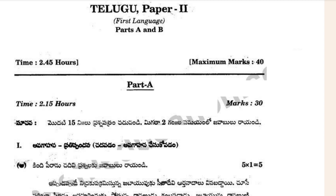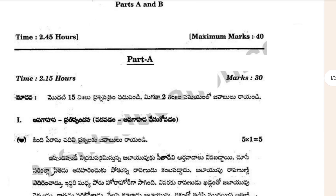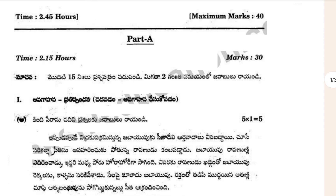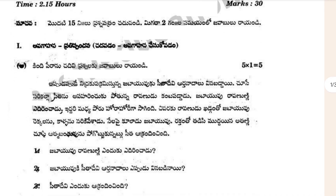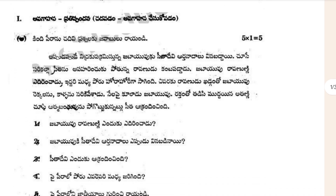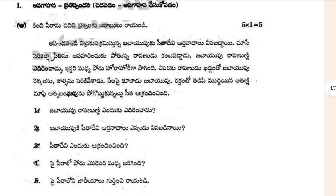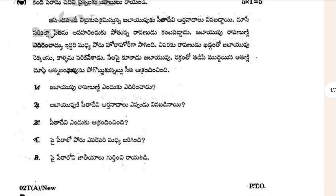This is our first language Telugu in Telangana. This paper is divided into two parts: Part A and Part B. Each section — A, B, C — is like in English. There are five questions given, each containing one mark, so five into one equals five marks.